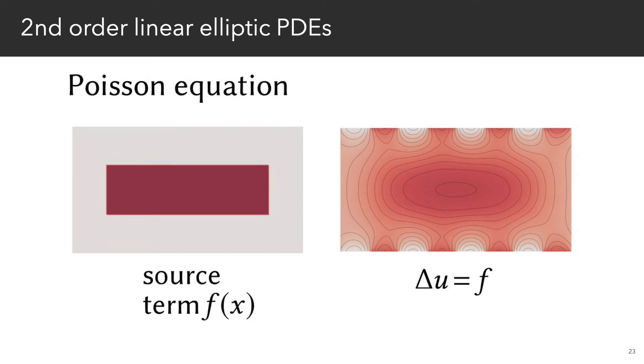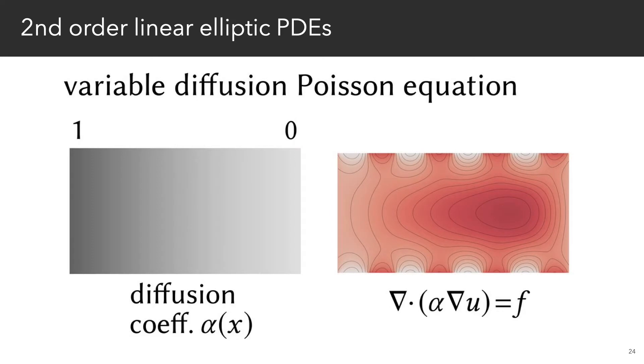Adding a source term F yields a Poisson equation, where F describes a background temperature. Imagine heat being pumped into the domain at a rate F at each point X.